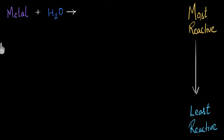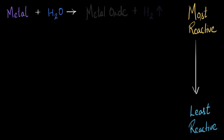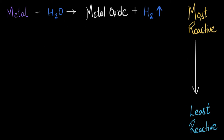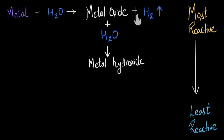Generally, when metals react with water, they displace the hydrogen from water and form metal oxides. So our products are going to be metal oxide plus hydrogen gas being evolved. Now, some metal oxides are soluble in water, which means if the metal oxide is soluble, it will react with water to form metal hydroxide. So either our products are metal hydroxide plus hydrogen gas, or a suspension of metal oxide in water plus hydrogen gas.